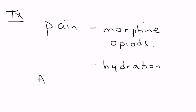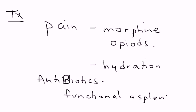Another part of the treatment of sickle cell is antibiotics. When somebody has sickle cell anemia, their spleen will have reduced function. Because the sickle cell red blood cells are accumulating in the spleen, the spleen will no longer be able to clear them like it used to with normal red blood cells. So you get something called functional asplenia — these patients do have a spleen, but it's not functioning properly. If a person's spleen is not functioning properly, it makes them susceptible to infection with certain encapsulated bacteria.